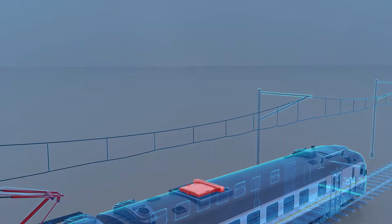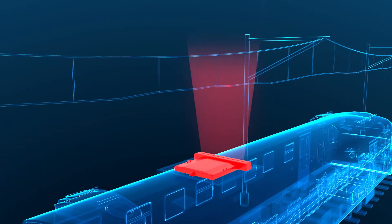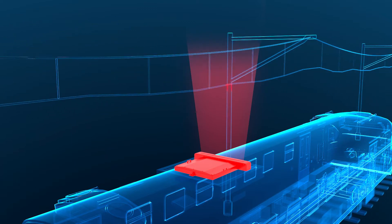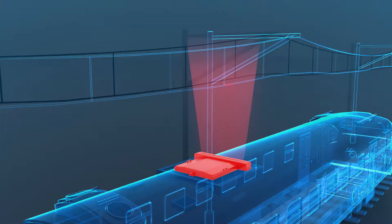For this purpose, in the first step, the current condition of the overhead catenary is measured by a device and the exact profile of the contact wire is determined.